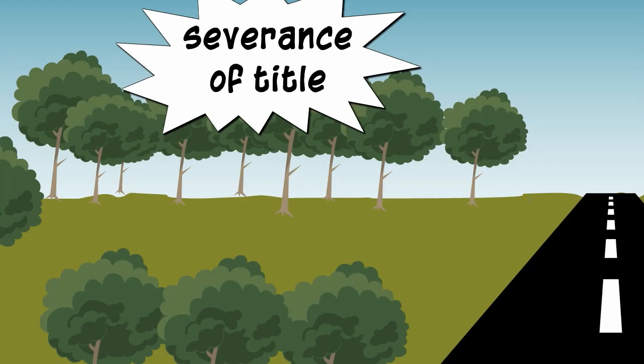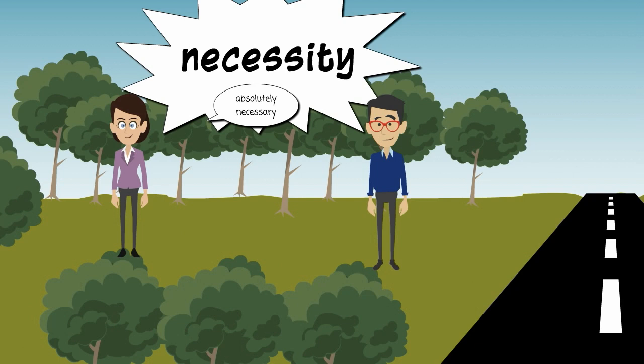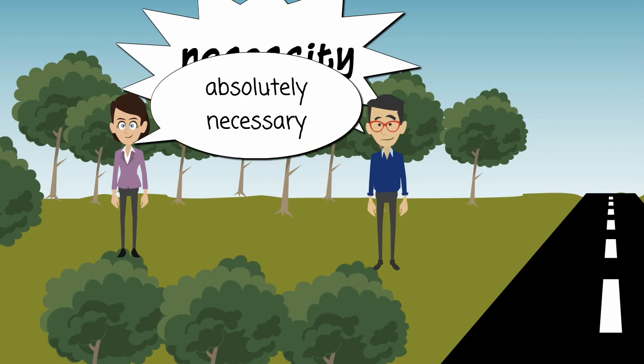Severance of title basically means that at one point the property was owned by only one person, but now the property has been divided among more than one person. And here, necessity of the easement means one person really needs the easement — it's absolutely necessary.